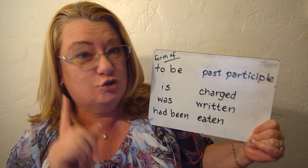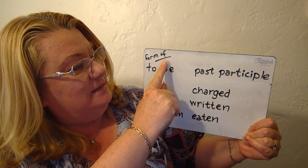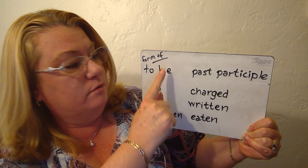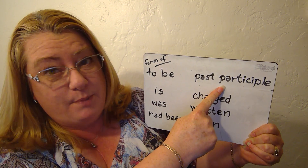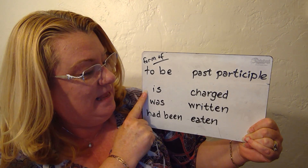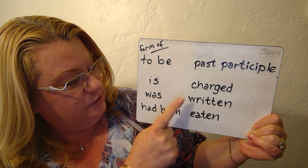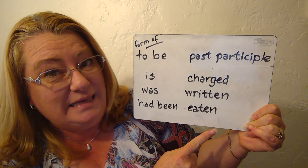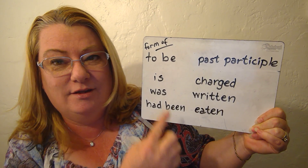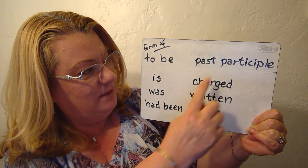Let's review the structure real quick. It needs to have the forms of 'to be' plus a past participle, such as 'is charged,' 'was written,' 'had been eaten.' These are the forms of 'to be' and then the past participle.